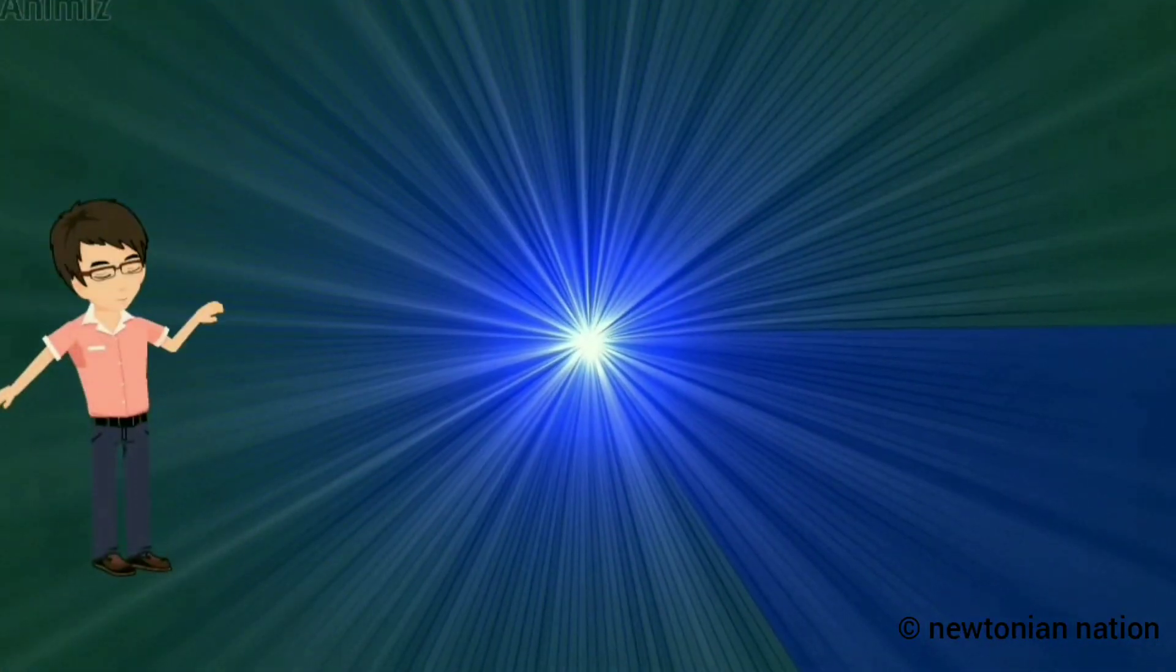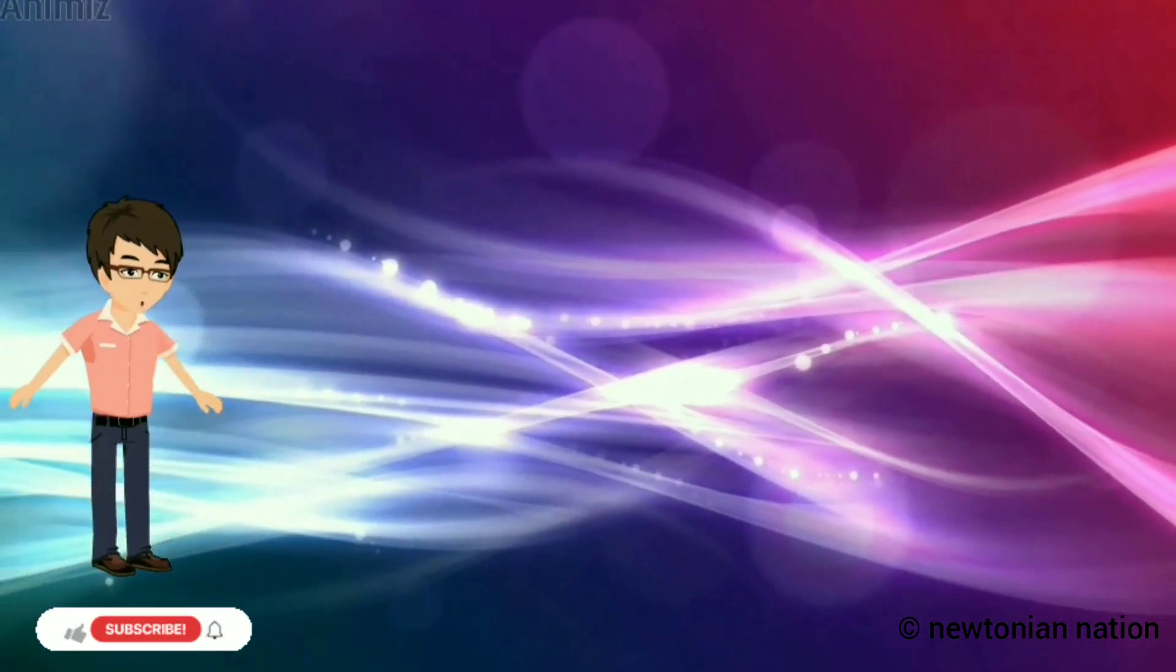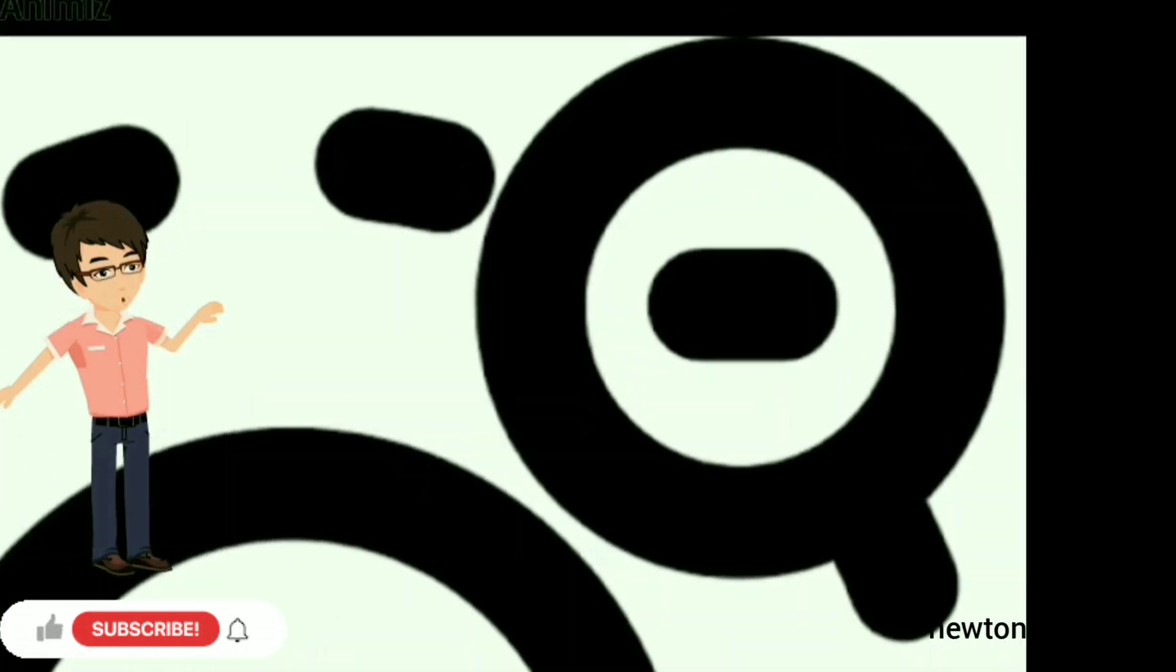You all know that light has dual nature. One is particle and another one is wave. Likewise, electron also has the dual nature.